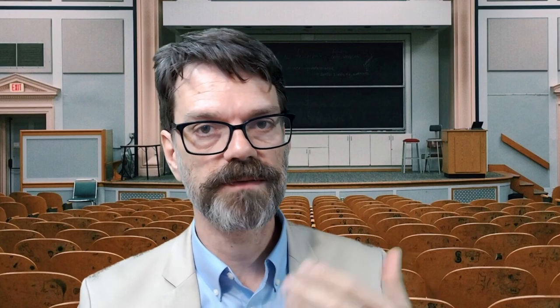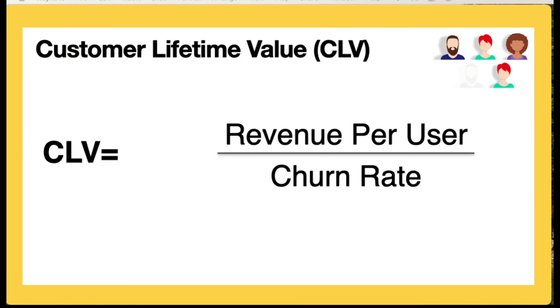So on average, a customer is going to stay with us for five years. Some may stay for ten years, others may leave almost immediately. But on average, given that churn rate, we can expect customers to continue using our service for five years. From here, we can calculate the customer lifetime value — what is the value of that customer over those five years — figured as revenue per customer divided by the churn rate.